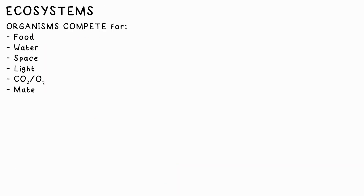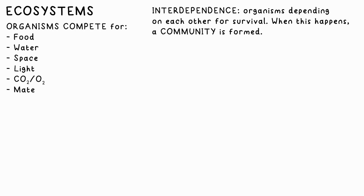Organisms generally compete for food, water, space, and other things like CO2 and light for plants, shelter, and mates for animals. Interdependence is the term given to the fact that organisms can rely on each other for these things, and they can form a community.